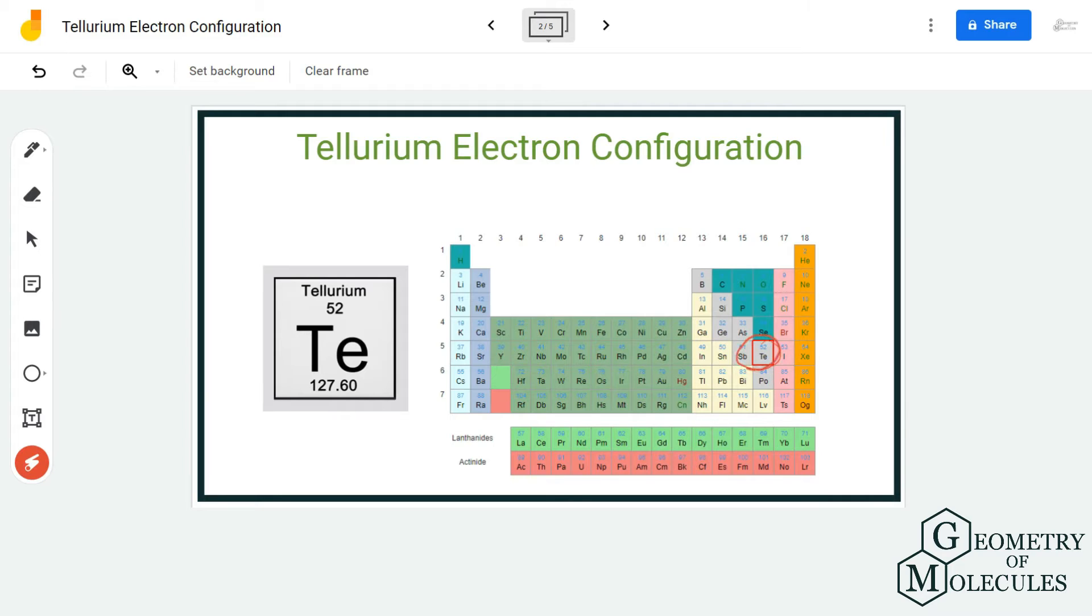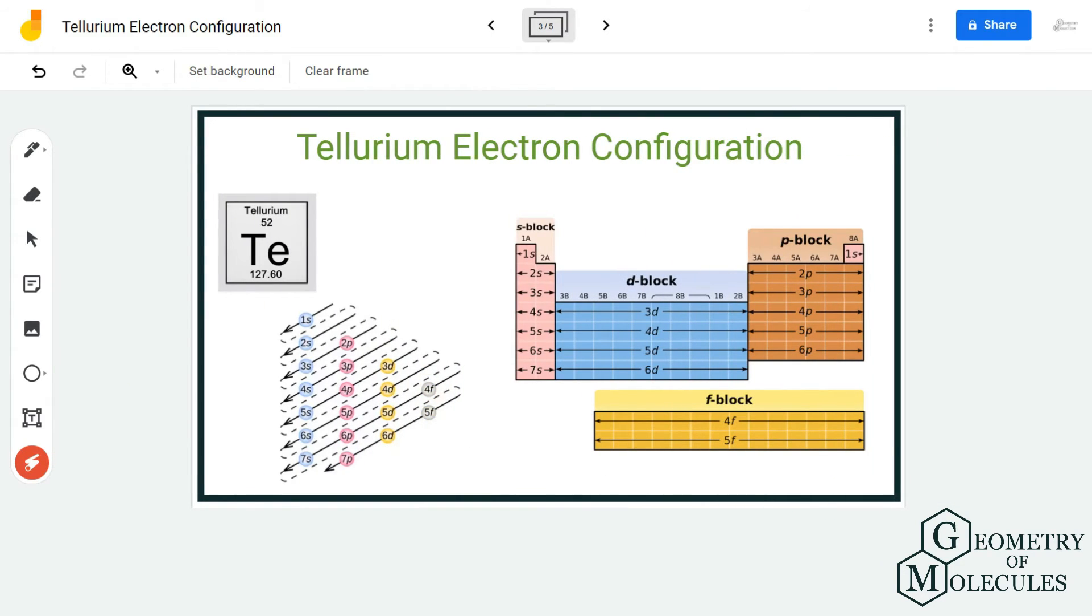As we now know that it has 52 electrons, let's start arranging the electrons in the orbitals. It will first occupy the 1s orbital and then it will move on further. We can start writing the electron configuration where it will first occupy the orbitals with low energy and then proceed to the orbitals with high energy.